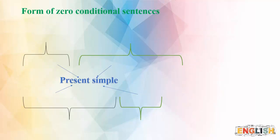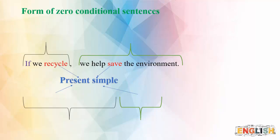A few things to remember about the zero conditional. First, we use a comma to separate the if-clause from the main clause, but only if the if-clause is at the beginning of the sentence. We don't use a comma if the if-clause is at the end. For example: 'If we recycle, we help save the environment.' Here 'if we recycle' is the if-clause, and 'we help save the environment' is the main clause.